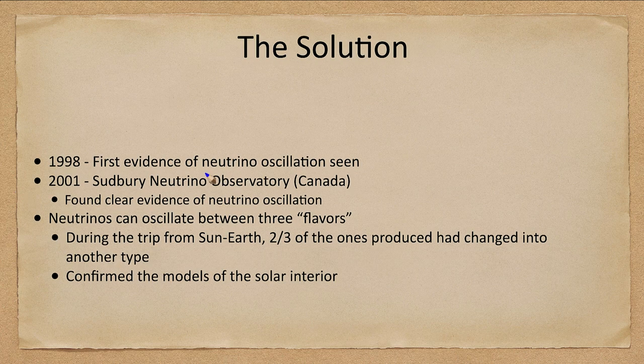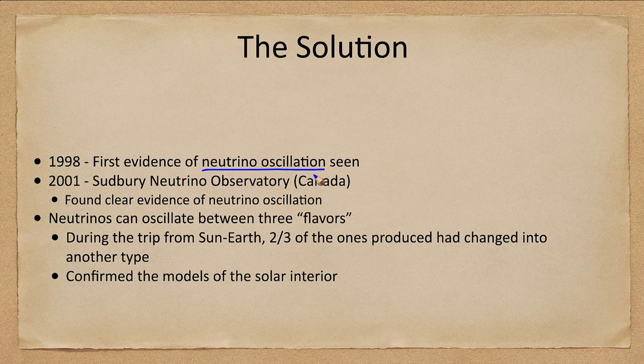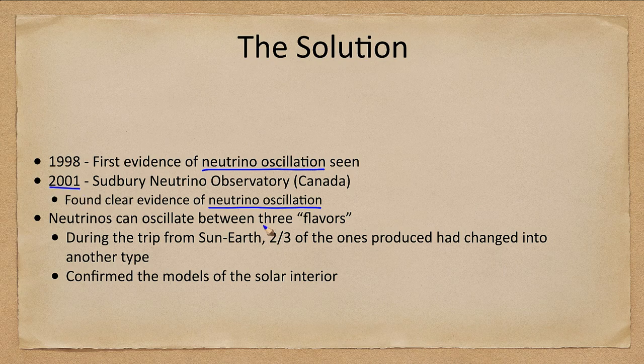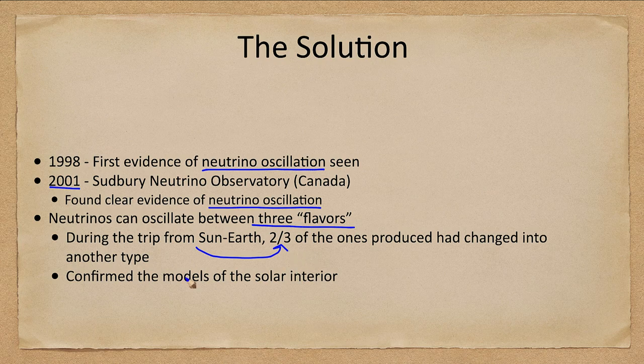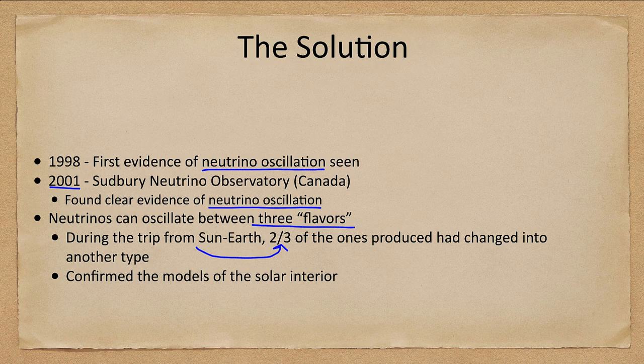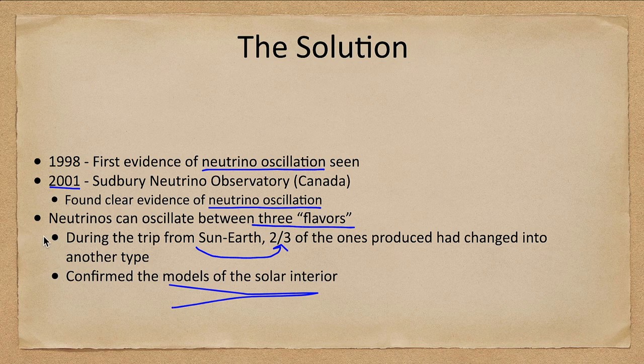So what was found? In 1998, we got the first evidence of neutrino oscillation that was seen, and then clear evidence a couple years later. So in 2001, and we find that neutrinos can indeed oscillate between these three flavors. And that during the trip from the Sun to Earth, two thirds of those produced have changed into another type. So we should only be detecting one third of the amount, which is correct. We are now detecting the right amount that we expect to be able to detect. We're detecting the correct number, confirming our models of the solar interior.